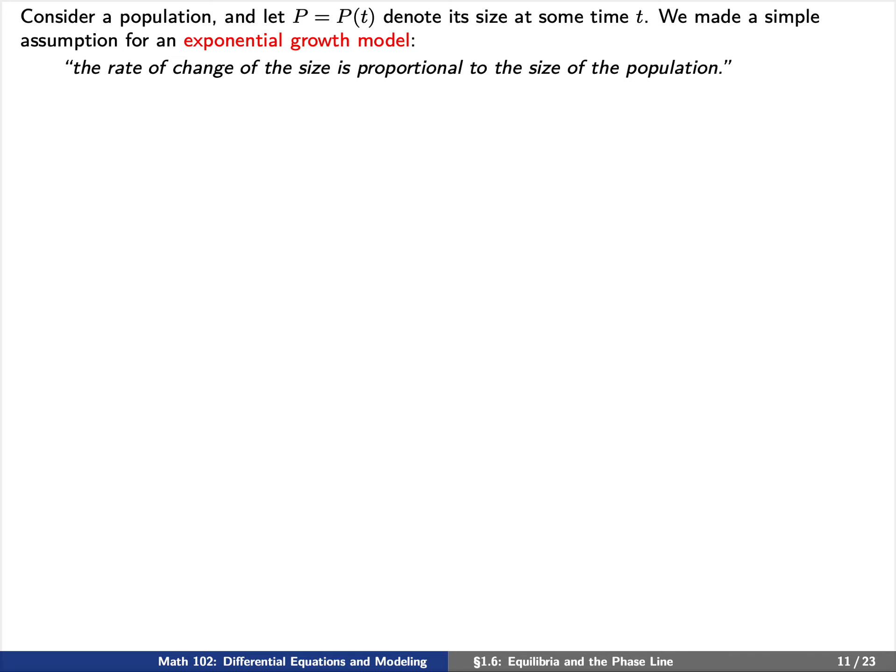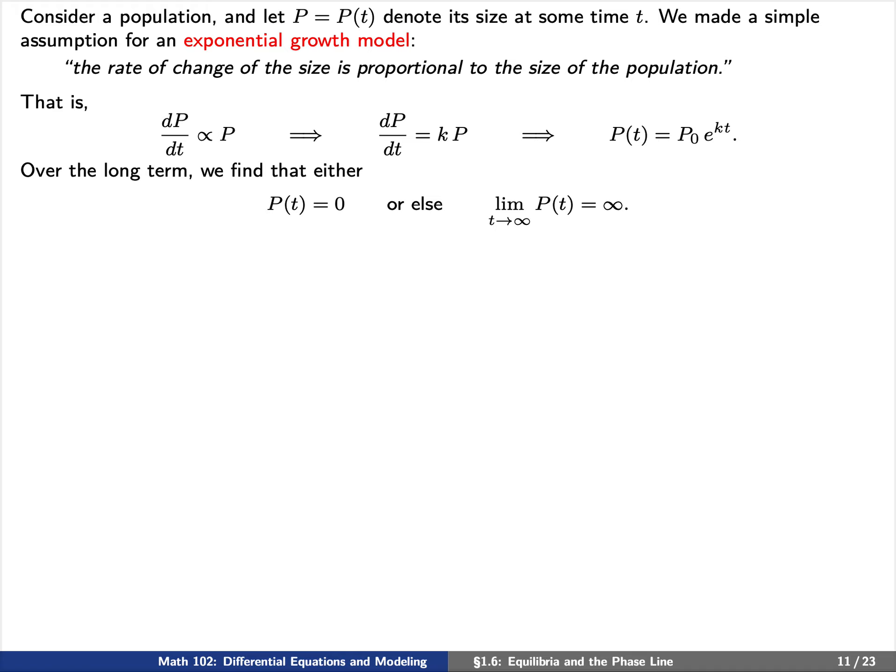Consider a population and let p(t) denote its size at time t. Earlier in this course, we made a simple assumption for an exponential growth model — that is, the rate of change of the size of the population is proportional to the size of the population. In other words, dp/dt is proportional to p, and we find that p(t) equals some initial amount p₀ times e to the kt. Over the long term, either p(t) equals 0 for all time t, or else as t increases without bound, the population increases to infinity.